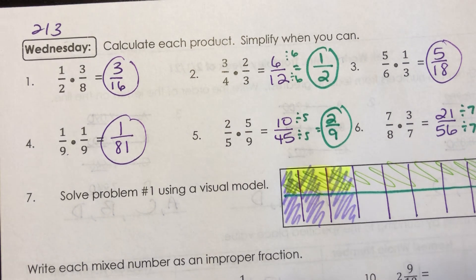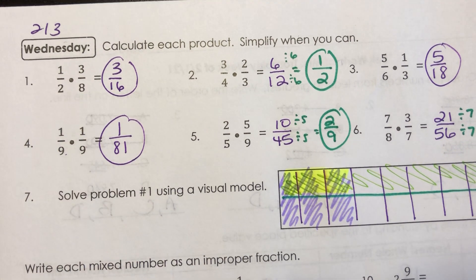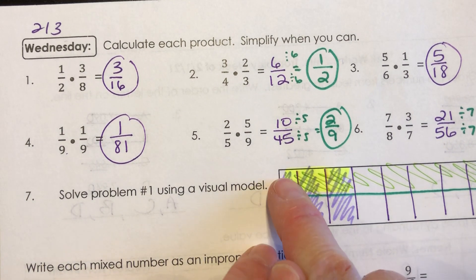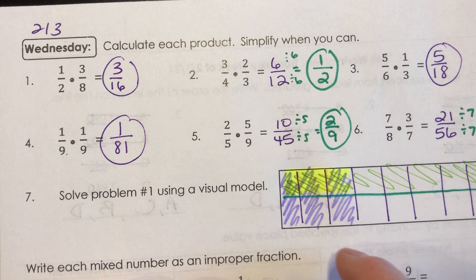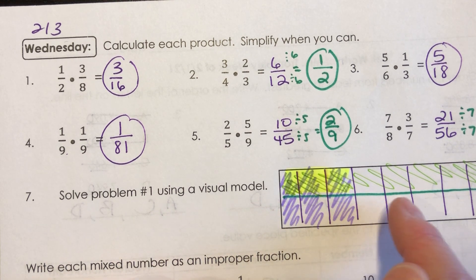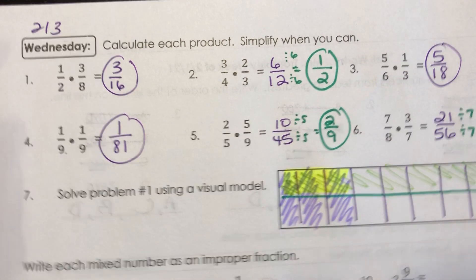And now we can actually see the 3 sixteenths because there are three pieces shaded out of 2, 4, 6, 8, 10, 12, 14, 16. There's your visual for it.